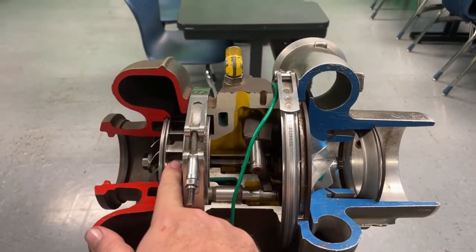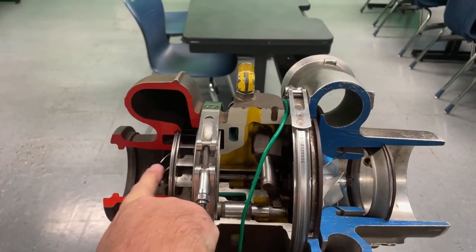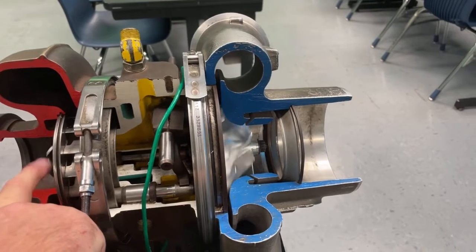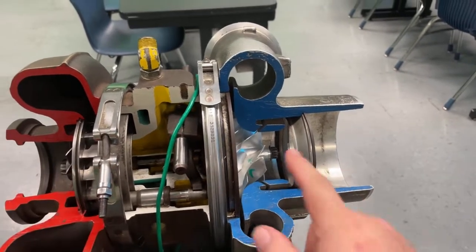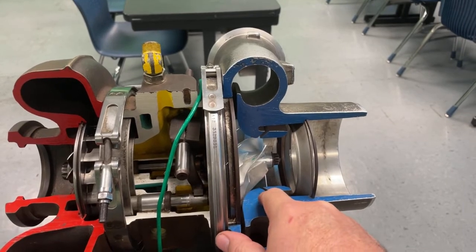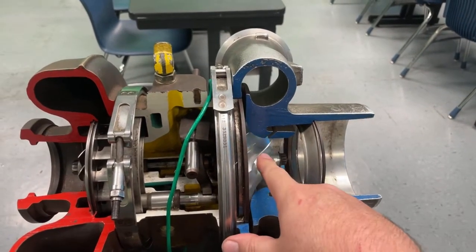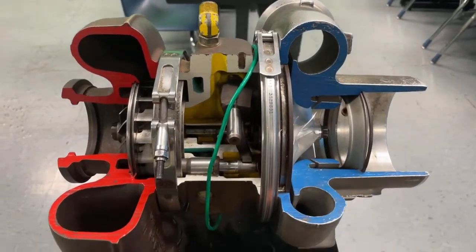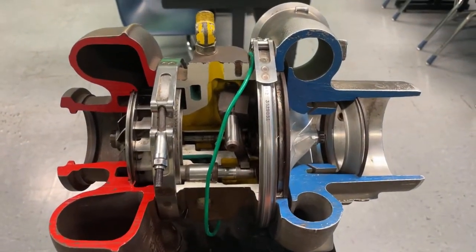Exhaust comes over here, spins this wheel, and when you spin this wheel you can see it spins the compressor wheel on the other side. That's what takes fresh air from the air filter, compresses it, and sends it to the cylinders. So you put more air in the cylinder, you make more power, and you're able to burn more fuel. That's the basic concept of what a turbocharger is designed for.